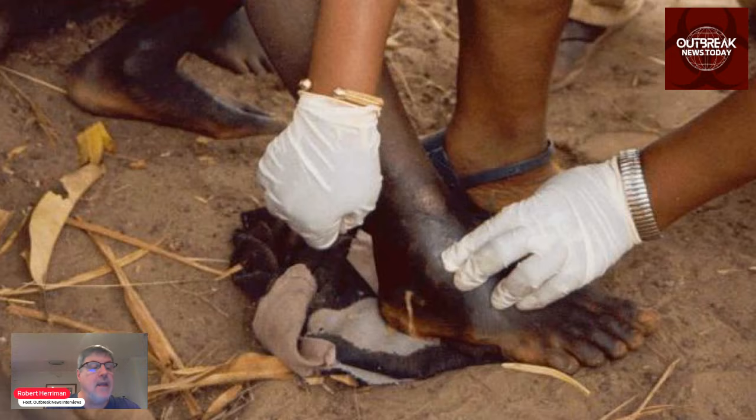However, unlike smallpox and polio, there is no vaccine to prevent it. In 2023, the Carter Center, who began leading the international campaign to eradicate guinea worm disease in 1986, when there was an estimated 3.5 million cases in at least 21 countries in Africa and Asia, reported 14 cases in five African countries: Cameroon, Central African Republic, Chad, Mali, and South Sudan.